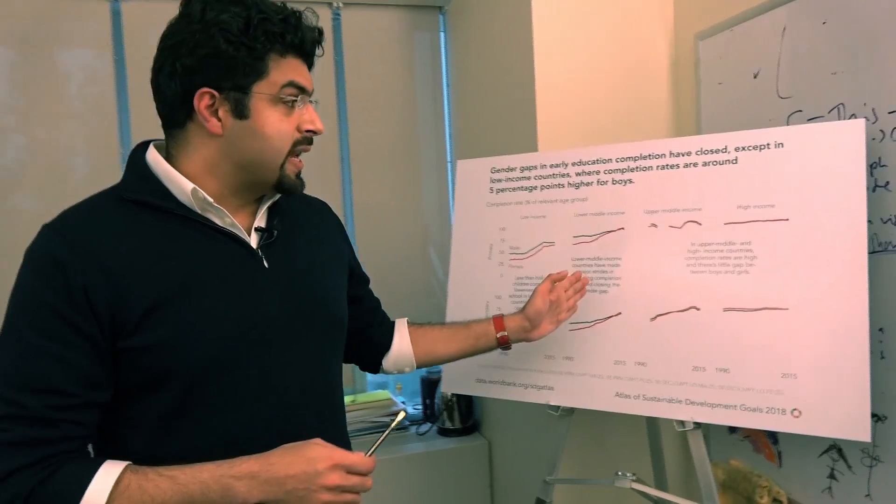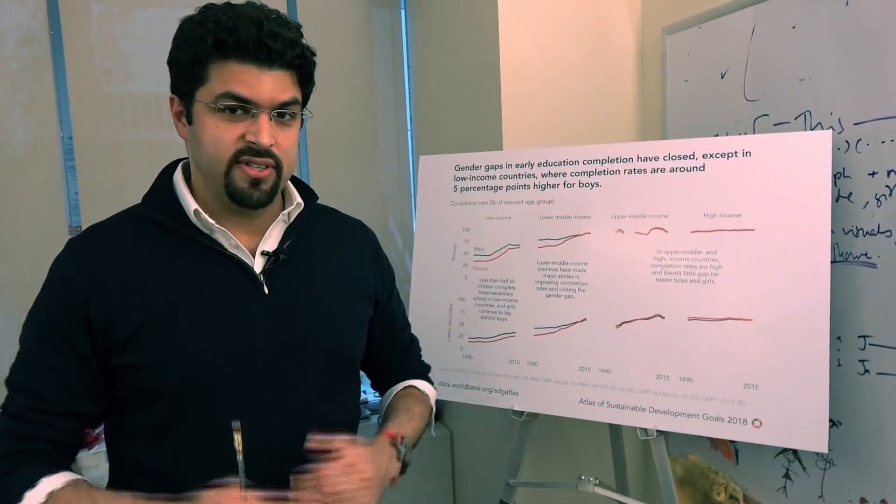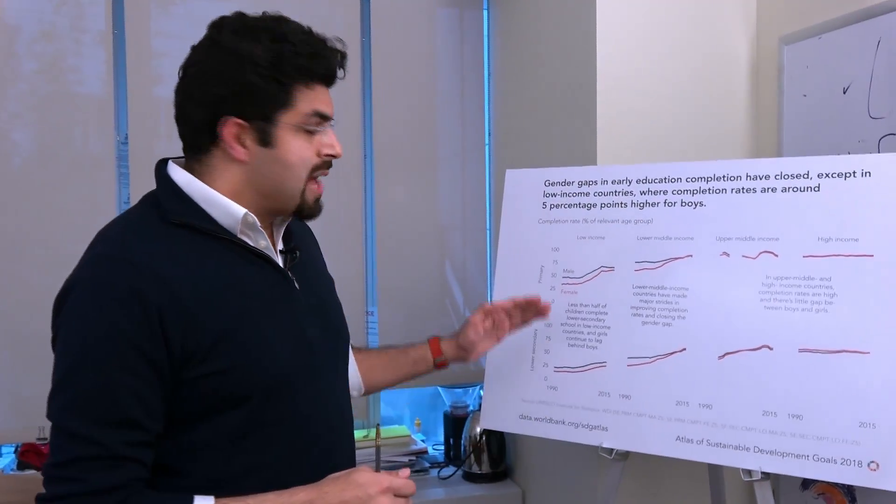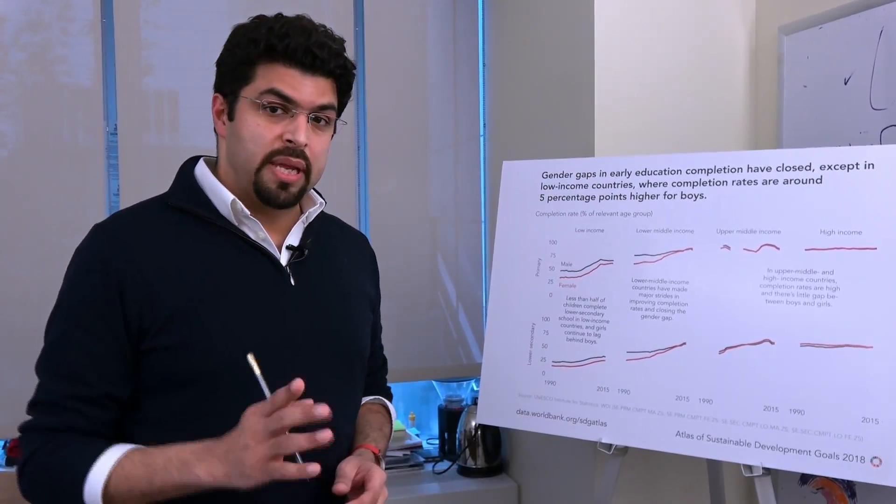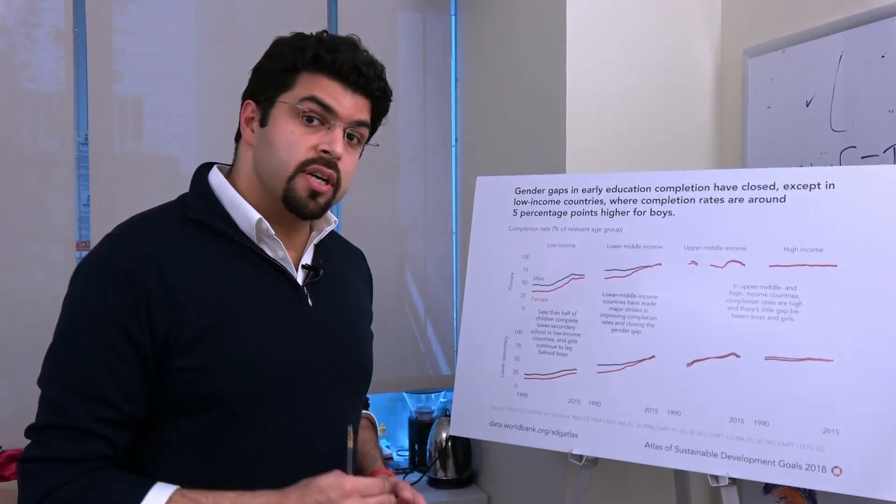In low-income countries, lower-middle-income countries, upper-middle-income countries, and high-income countries, there are some differences in how many kids complete primary school. In low-income countries, about two-thirds of children overall complete primary school, and there's still a bit of a gap between how many boys and how many girls complete school.